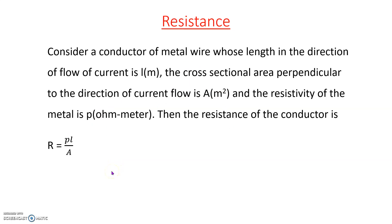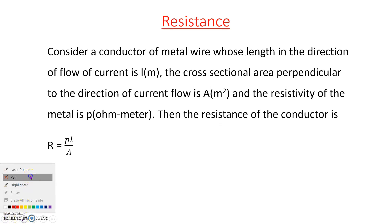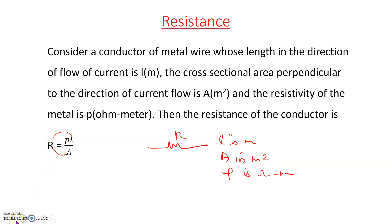Consider a conductor of metal wire whose length is L in meters, area of cross section A in meters squared, and the resistivity of the metal is rho in Ohm-meters. Then the resistance of the conductor is equal to rho times L divided by A, which means resistance is directly proportional to length and inversely proportional to the area of cross section of the conductor.